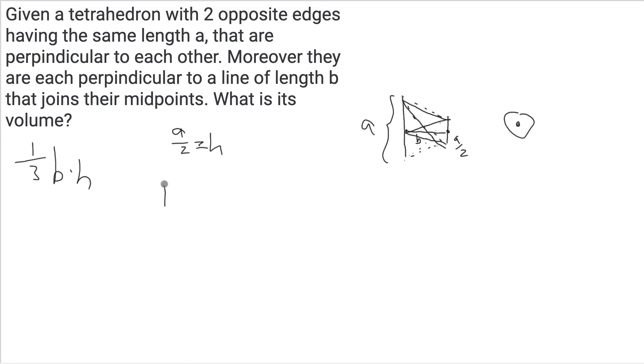We're going to call the base capital B. This equals the area of this triangle. If that triangle has base length A and height B, that's going to be AB over 2.